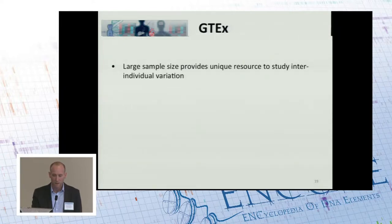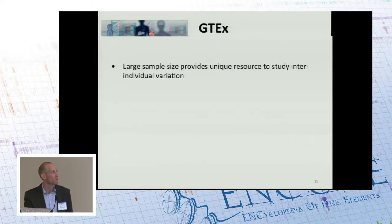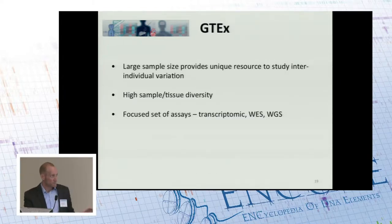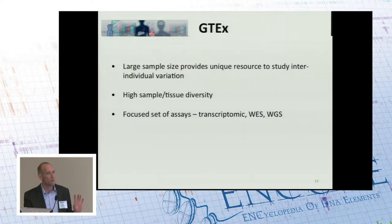The really distinguishing feature of GTEx is the large sample size. Looking at several hundred individuals really allows them to delve more deeply into inter-individual variation than some of the other projects being considered. They couple this with very high tissue diversity. To do this necessitates that they focus more tightly on the set of assays that they use. But together, this provides a really great set of resources for starting to understand how inter-individual variation impacts gene expression.